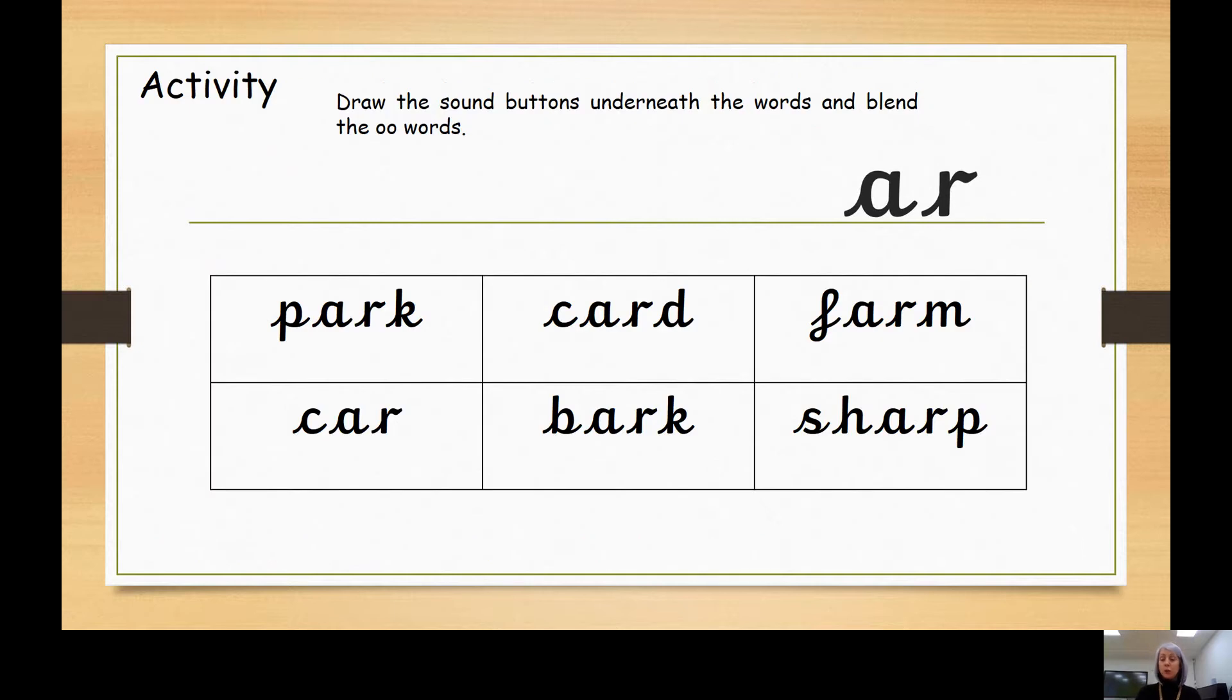Here we have our usual task of drawing the sound buttons underneath the words in order to blend them carefully and accurately. Don't forget to spot that digraph AR, but there may be other digraphs in the words or they might be single sound buttons. So don't let the words trick you. Have your detective heads on. Make sure you can spot all the digraphs you think you can see. You can see the sound buttons on the screen. Grownups, if you need to print this slide from the PowerPoint, or you could copy the words out for your child to draw the sound buttons on.